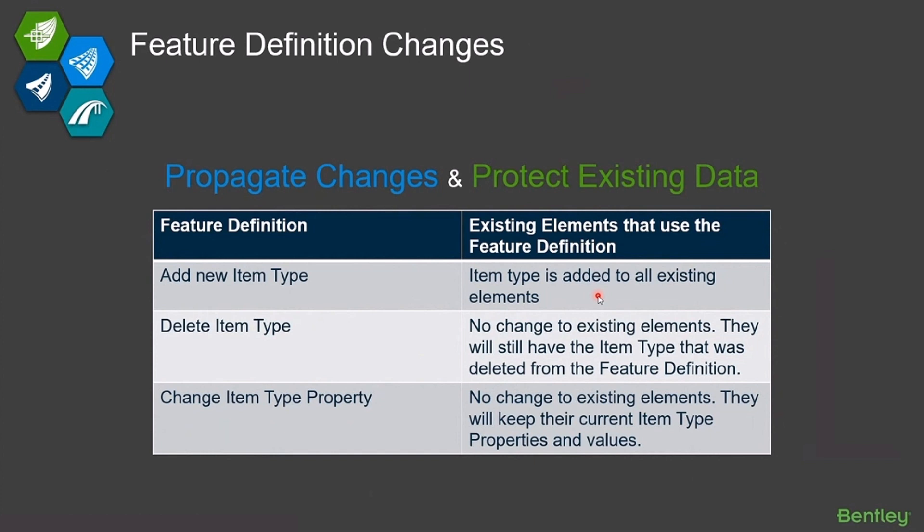Those item types will automatically get added to any elements out there that use that feature definition. So if you add something, all elements throughout your ecosystem will get that eventually as those elements are opened in files. However, if you delete or change an item type on a feature definition, we will never reach out to your production data and remove anything.